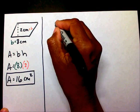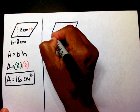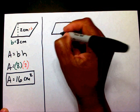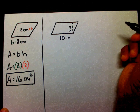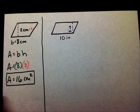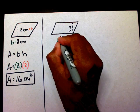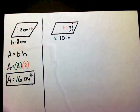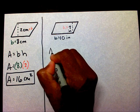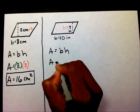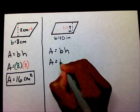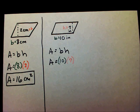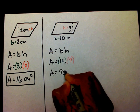Let's do another one. Can you locate your base and your height? Your base is right here and your height is over here. So I'm going to write my formula: A equals B times H. A equals 10 times 7. Well, 10 times 7 is 70 inches squared.